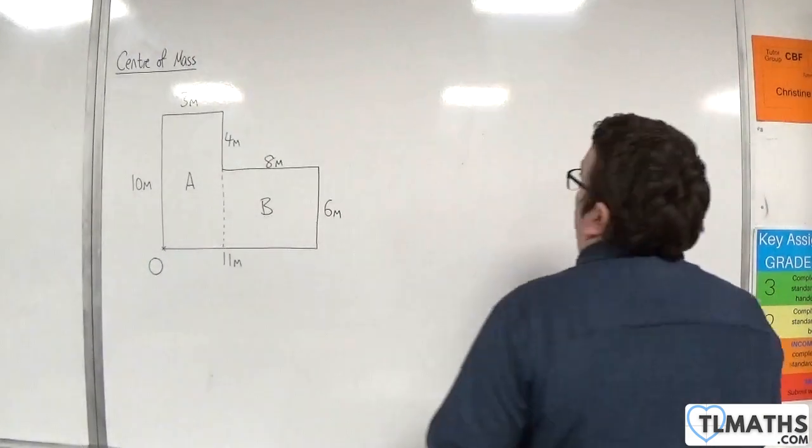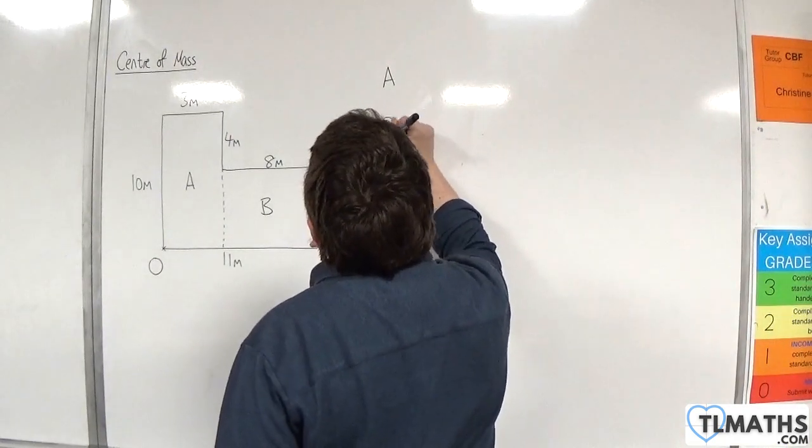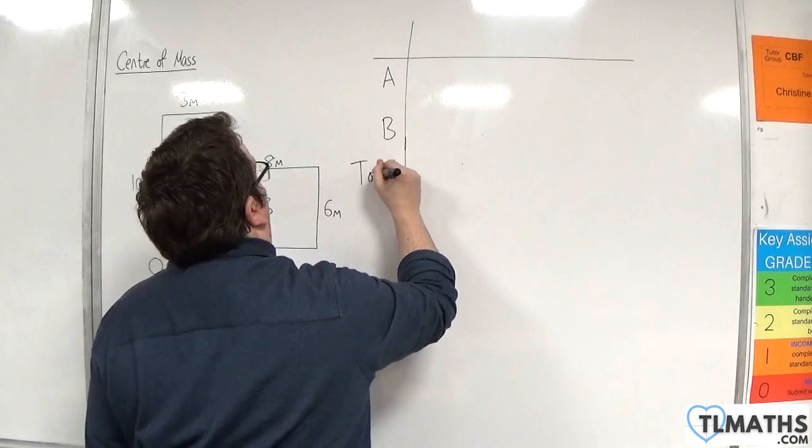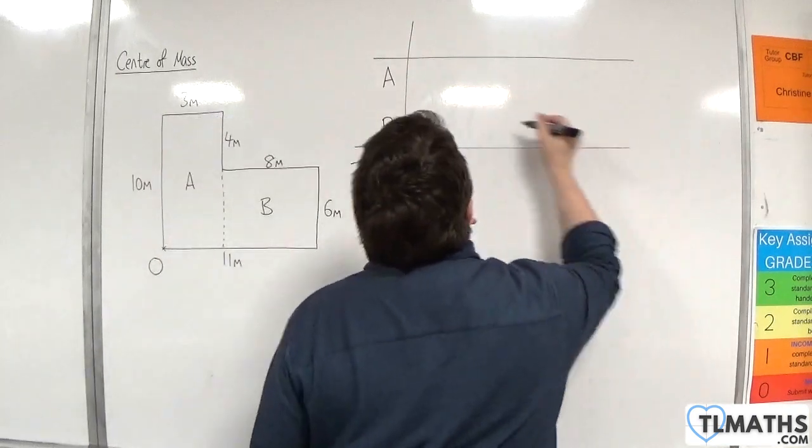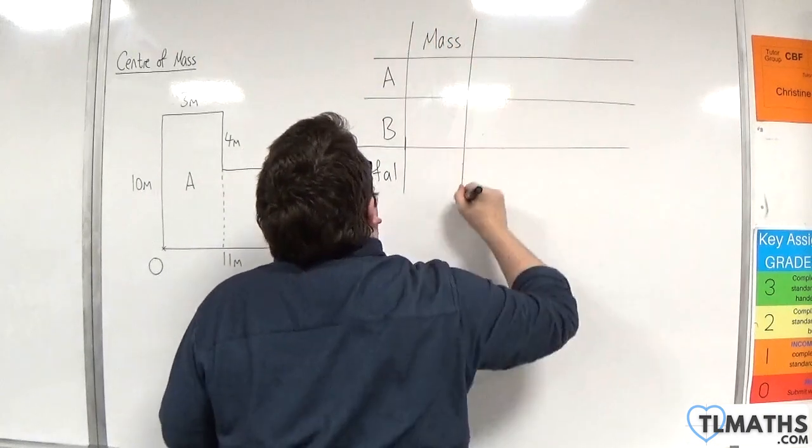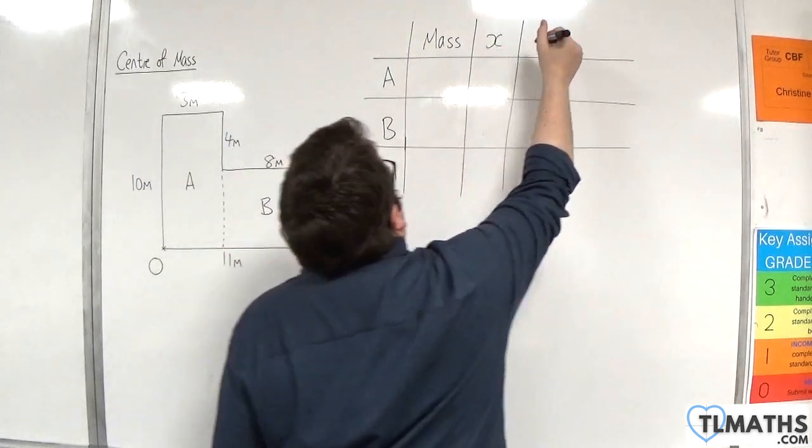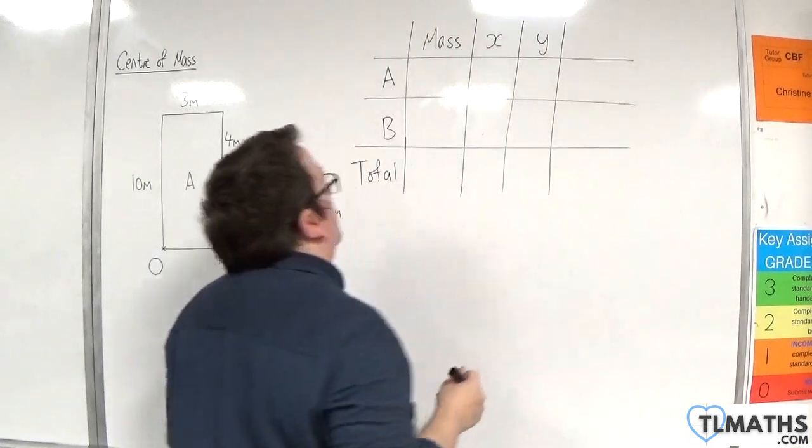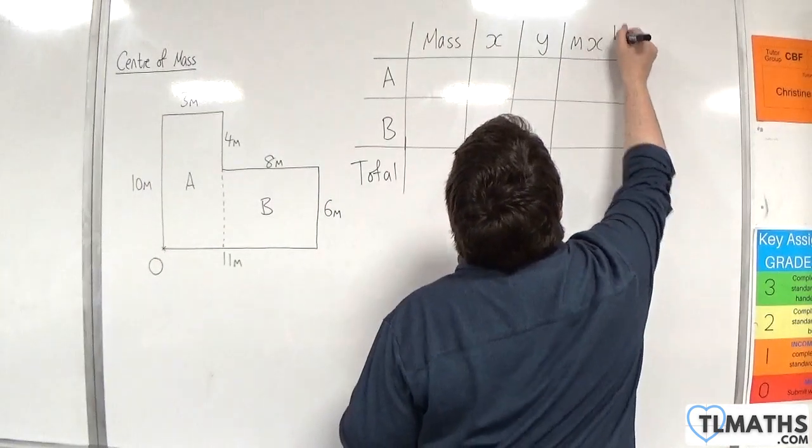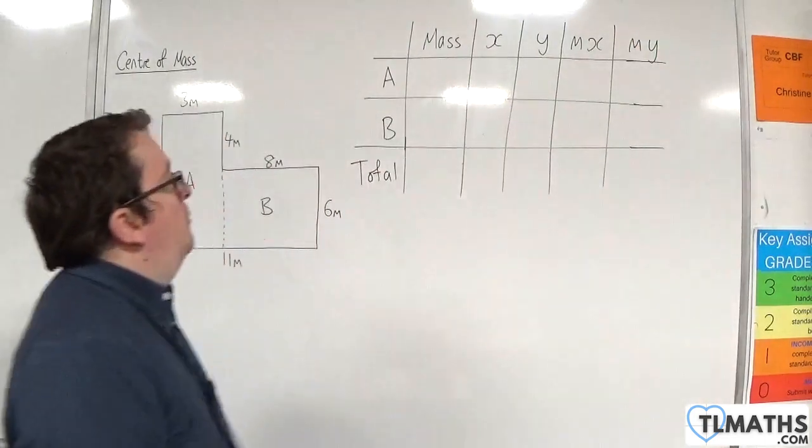So we have laminar A, laminar B. I'm also going to have a total. We need the mass. We need the center of mass of the two rectangles, the coordinates of that for X and Y. We're then going to multiply the mass by the X and the mass by the Y. So here's my table already.